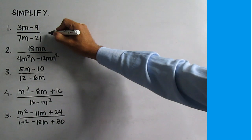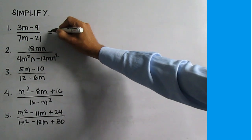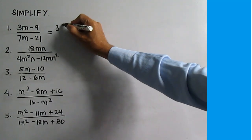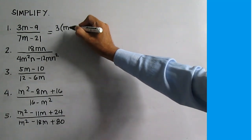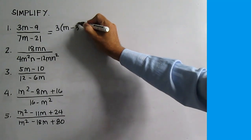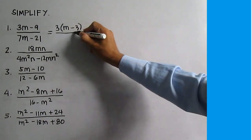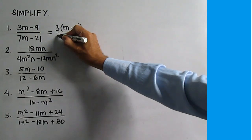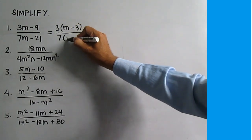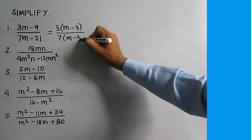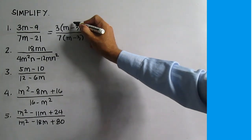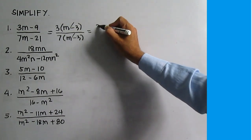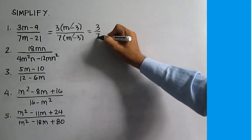3M minus 9 has a common monomial factor which is 3, and the other factor is M minus 3. 7M minus 21 also has a common monomial factor which is 7, and the other factor is M minus 3. M minus 3 is common. Divide. This is equal to 3 over 7.